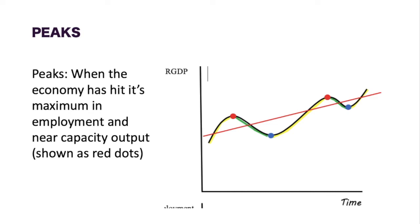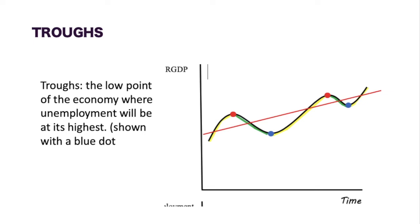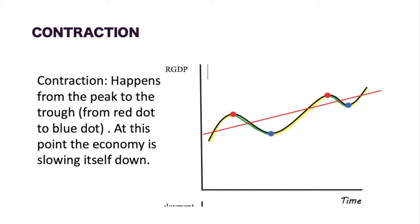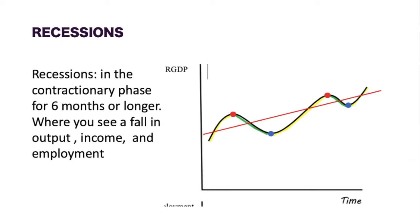If we go down the curve, you'll notice the blue dots, which represent the troughs. This is the low point of the economy where unemployment will be at its highest and output will be very low — a lot of people are not working, so we are not producing as much stuff and GDP goes down. At a peak, we would run contractionary policy to try to slow down the economy. This happens from the peak to the trough — the point where the economy is slowing itself down, applying the brakes so we are not going too fast.